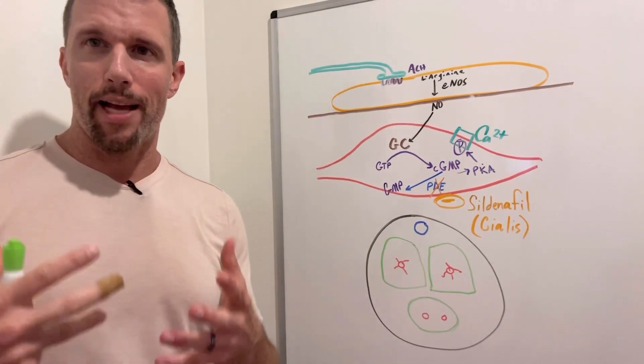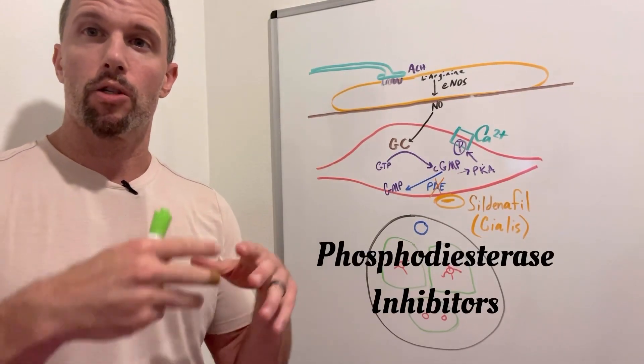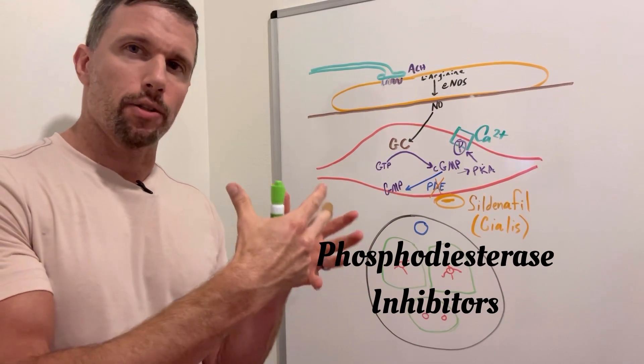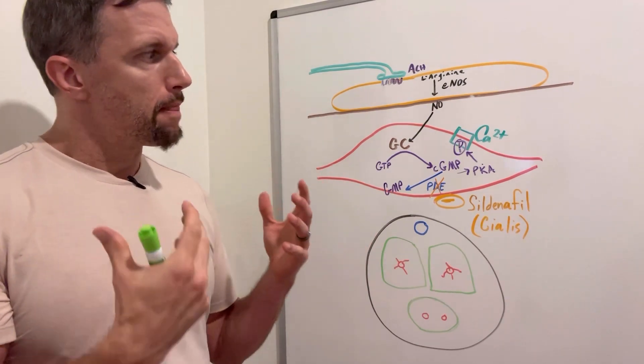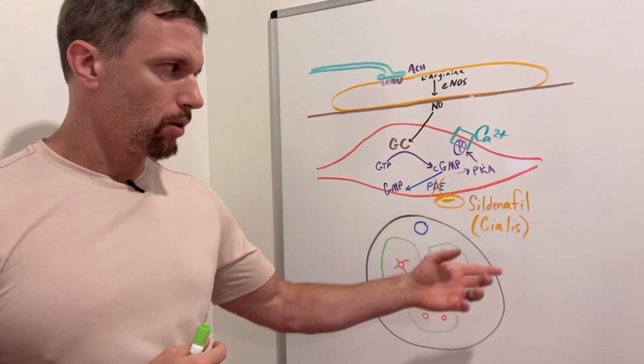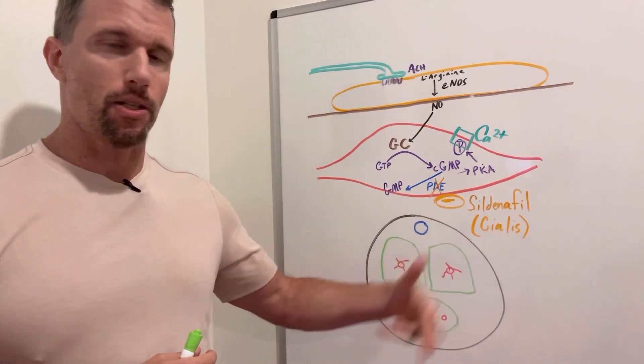In this video, we're going to talk about phosphodiesterase inhibitors that work to improve erectile dysfunction. The most common drug used here is sildenafil, also known as Cialis as its trade name.